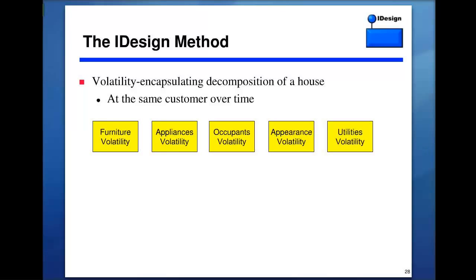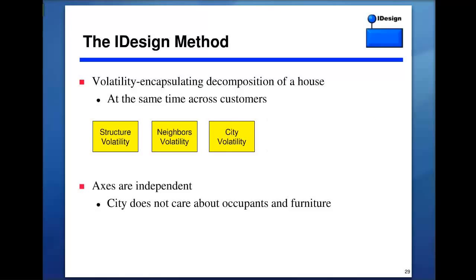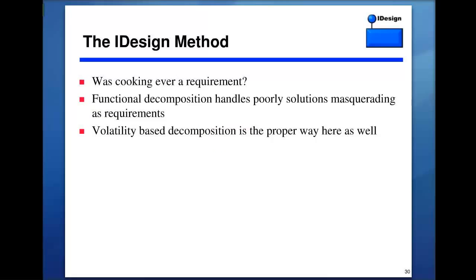Even copying my house to a different city, it wouldn't be the same — different neighbors, different city regulations, different taxation, different structure. There are differences across different consumers of the entity called the house. Note that nowhere in this volatility-based decomposition of a house do we see a block called 'cooking' — there is no concept of a functionality called cooking. You would implement cooking by integrating the blocks together. Also note the axes are independent — the city doesn't care about occupancy and furniture as long as you abide by building permits and pay taxes.